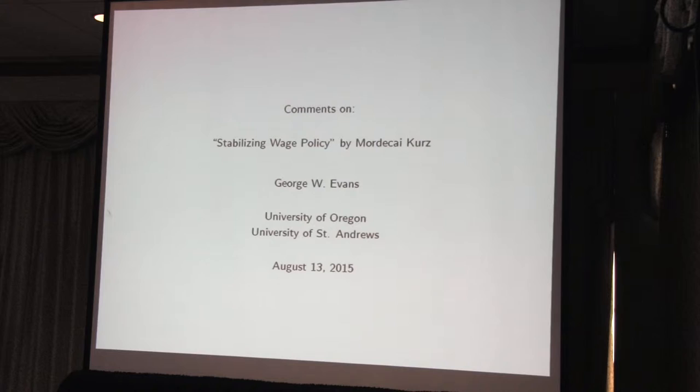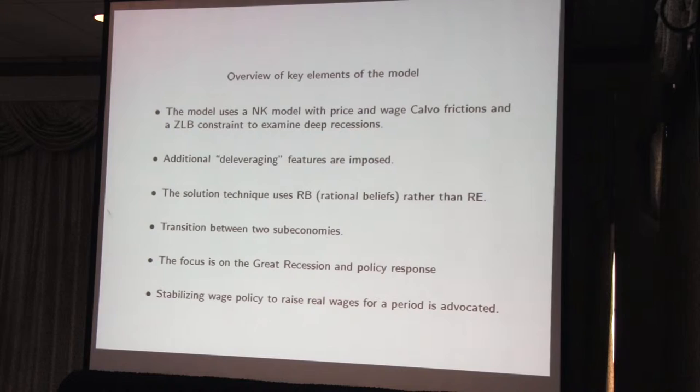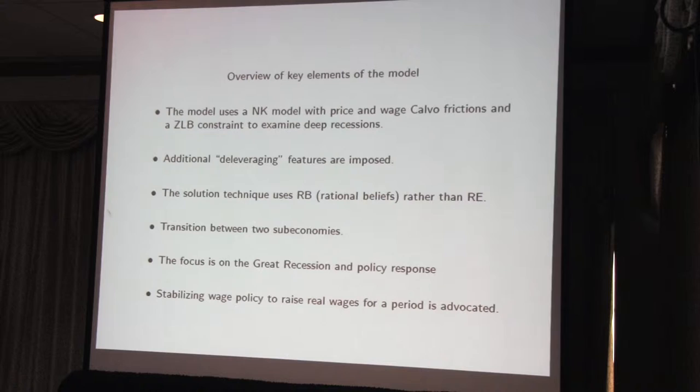I'll quickly overview the model. The key elements are a New Keynesian model with price and wage Calvo-type frictions and a zero lower bound. The emphasis is on looking at deep recessions. He's added additional deleveraging features, which are kind of imposed from outside the formal model but are very well motivated. The solution technique uses the rational beliefs or diverse expectations approach rather than rational expectations, although as Mordecai was saying, that may not be central to some of the main policy points.